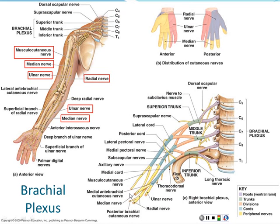The brachial plexus starts with spinal nerves C5, 6, 7, 8, and T1. These spinal nerves join together to form trunks, then split and join again to form cords, and eventually we get the named nerves that emerge from the other end — a classic plexus or mixing network of nerves.